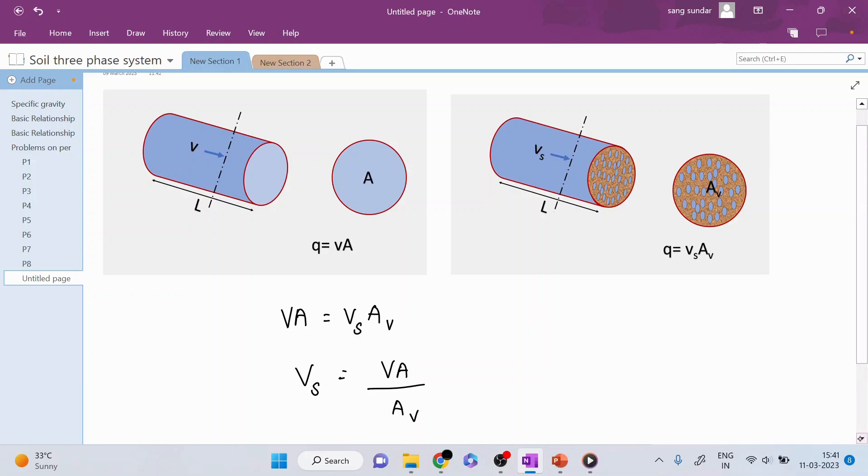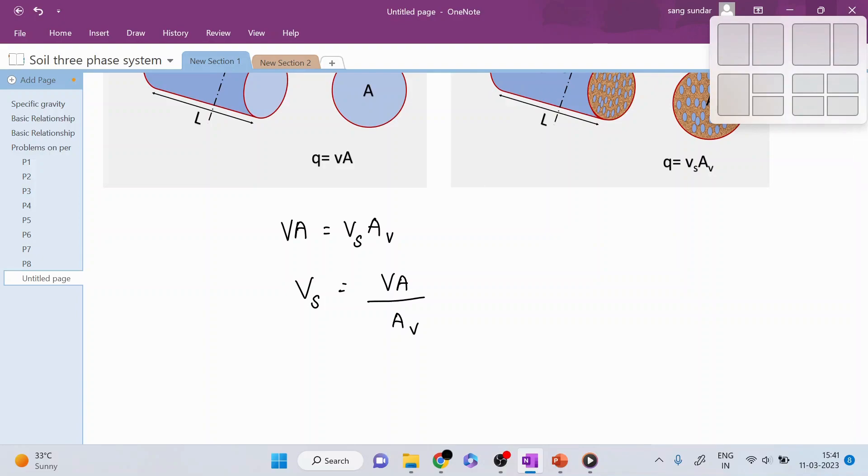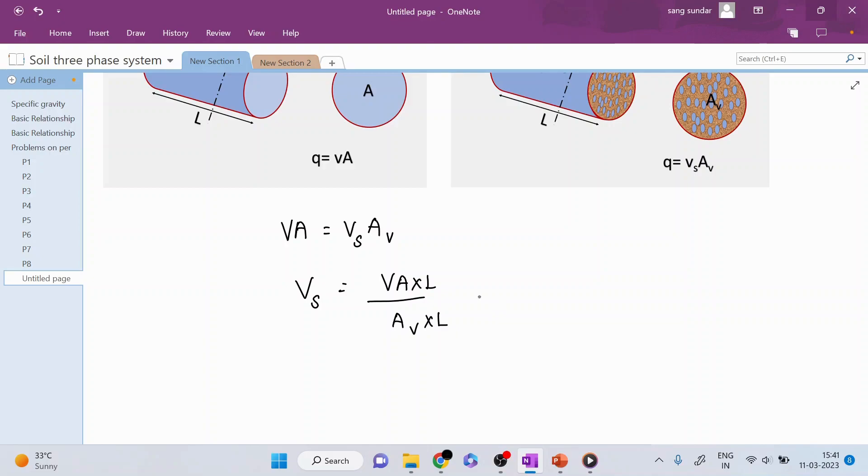Now, I will multiply the numerator and denominator by the length of this cylindrical volume, L. What is A times L? Area of cross section times length, which forms the volume.